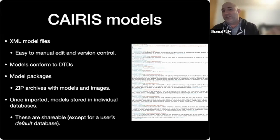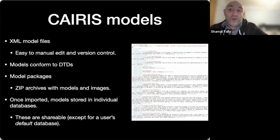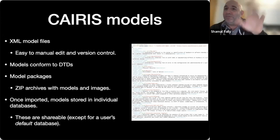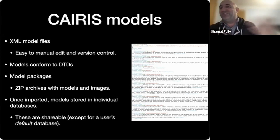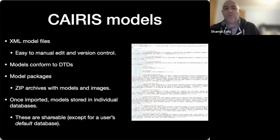You sometimes get these .karis files — all they really are are zip files with images you might have uploaded, and if you're working with architectural patterns they might include other composite models as well. If you really know what you're doing — and I have known people that have done this — you can work with Karis by just hacking the XML files and uploading them to see the models. But I wouldn't recommend that, because you'll be surprised how many dependencies there are and you may get odd errors when you try to import things.